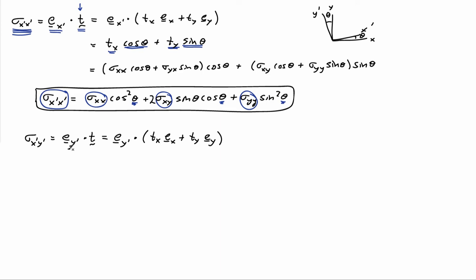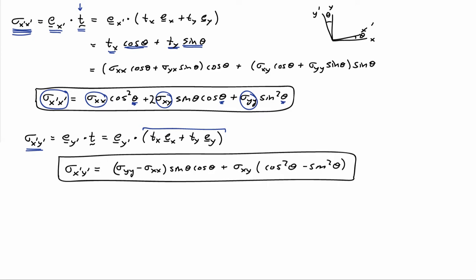If I look at the y prime component of the traction — still on the surface whose normal is e x prime — and dot it with e y prime, I get the parallel component, which is sigma x prime y prime. Expanding T in terms of the xy coordinate frame and taking the dot products using the geometry of the relationships between the x, x prime, y, y prime axes, I arrive at an expression for the shear stresses in one coordinate frame in terms of the stresses in the original frame and the angle between the two frames.